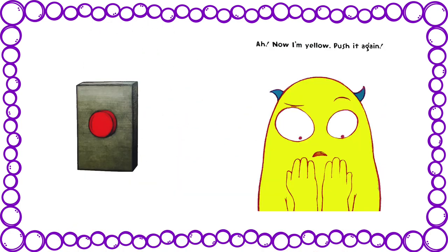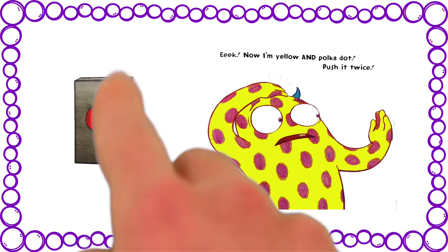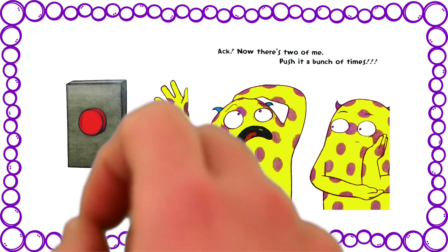Now I'm yellow. Push it again. Eek. Now I'm yellow and polka dot. Push it twice. Eek. Now there's two of me. Push it a bunch of times.